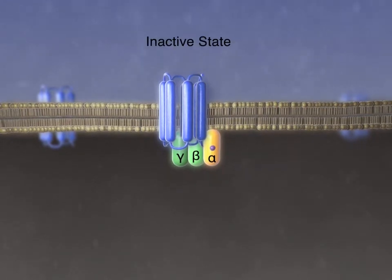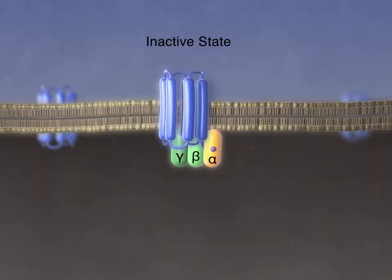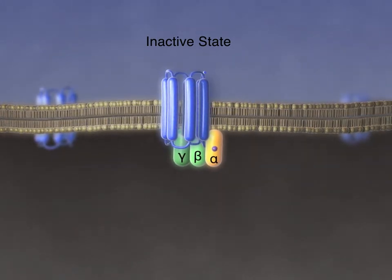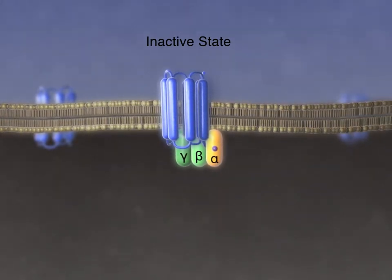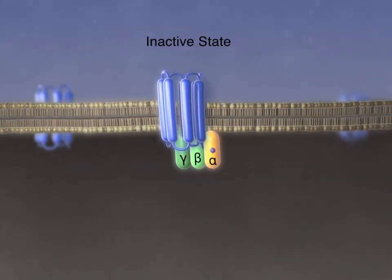This is the basal or inactive state of the receptor and G-protein. In the example we are showing here, the GPCR is a beta-adrenergic receptor and the G-protein is G-S.